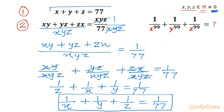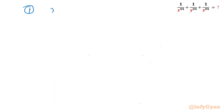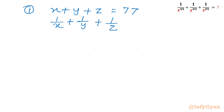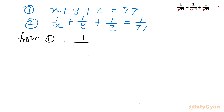Equation number 1 is x plus y plus z equal to 77. From equation 1, we can take the reciprocal of both sides, giving 1 over x plus y plus z equal to 1 over 77. Let me call this equation number 3.